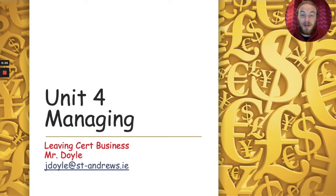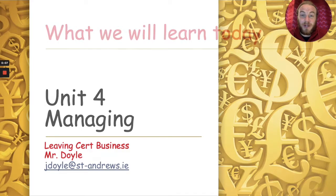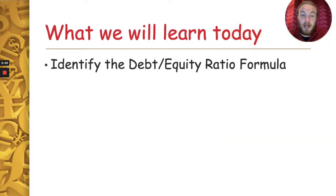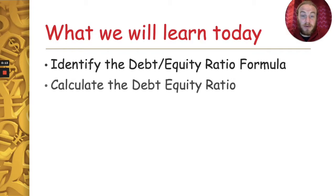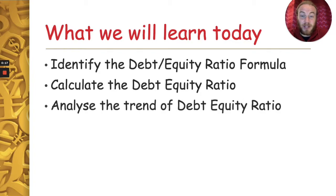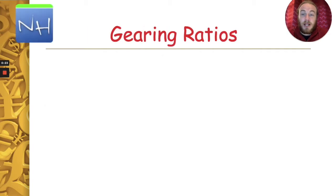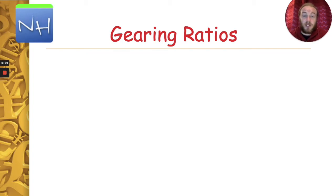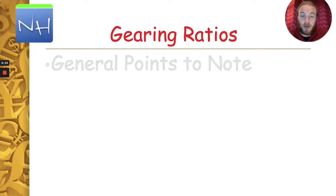Hello and welcome to this video in our series on Unifor for the Leaving Certificate Business. This is our last video on calculating ratios. In this video we're going to look at the debt equity ratio, the formula for it, calculating it, analysing the trend, and finding out what each of the various terms within that means. We've looked at profitability ratios and liquidity ratios in the last videos. This is what we call a gearing ratio and it's the only gearing ratio we have on the course.